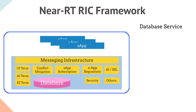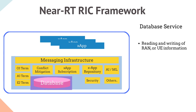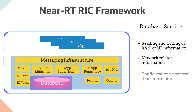Next is Database Services, which allows reading and writing of RAN or UE information and other information required to support specific use cases. The Near-RT-RIC and some X-Apps may generate or access UE-related or network-related information to be stored in the database. It also stores configurations and near-real-time information relating to connected E2 nodes and the mappings between them.